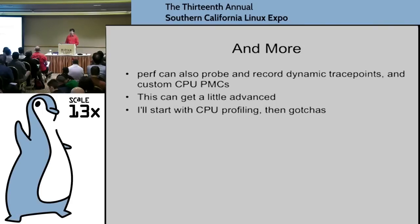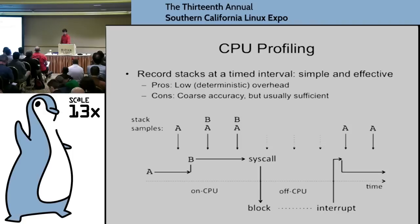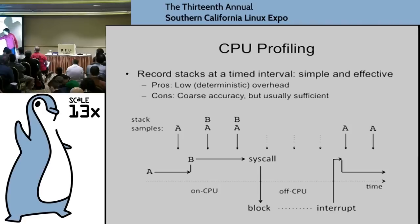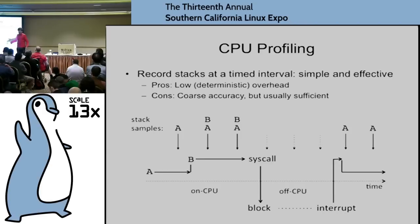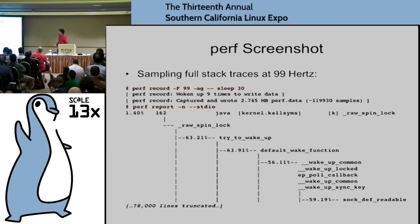CPU profiling is where you record a stack trace at a timed interval — like perf record -F99. Let's say function A called function B, then blocked, went off CPU. Perf record is not going to see it if I'm doing CPU sampling. It's a coarse, low-overhead way to understand why we're on CPU in terms of the stack trace. One thing I didn't show you is that on a production server running complex code, the full output of perf record can be 78,000 lines.